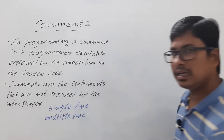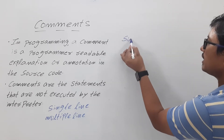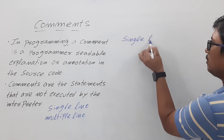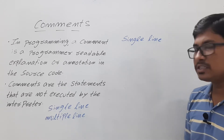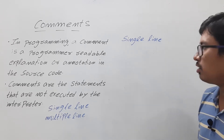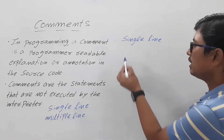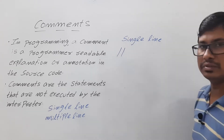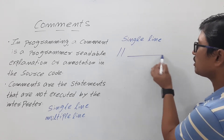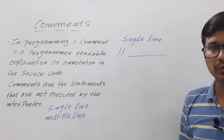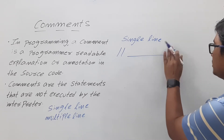A single line comment is where you write an explanation in a single line. In C programming, we usually represent a single line comment using two forward slashes, and then write whatever comment we want.